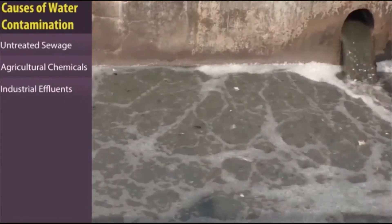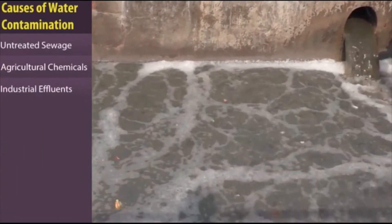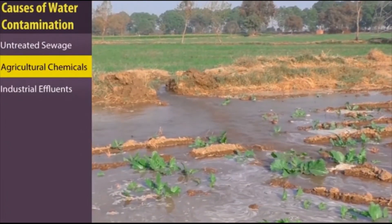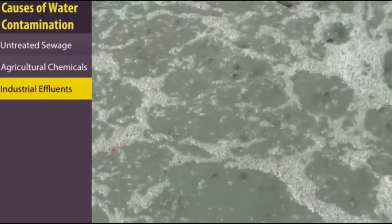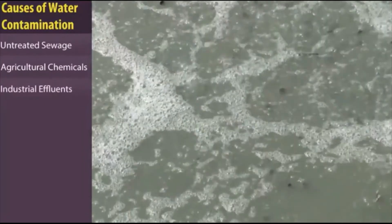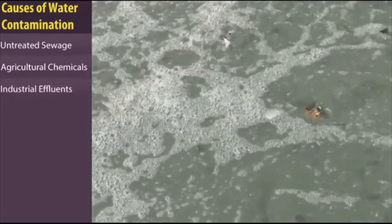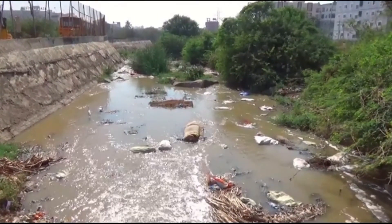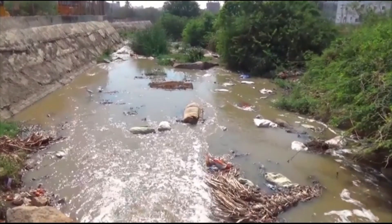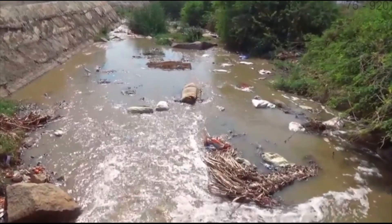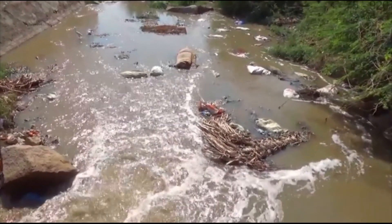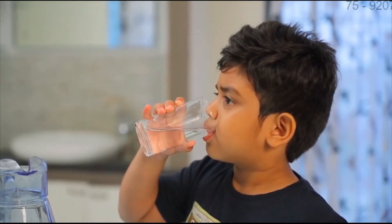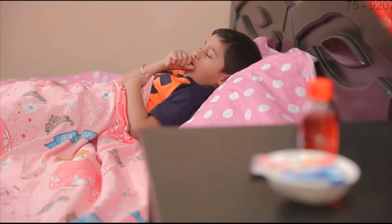Water is getting contaminated by the release of untreated or semi-treated sewage, agricultural chemicals, and industrial effluents into water bodies. These pollutants contain toxic nitrates, metals, and pesticides. These toxic chemicals are non-biodegradable — they form waste that cannot be broken down by other living organisms. These chemicals can enter human bodies through water and cause various diseases such as lead poisoning.